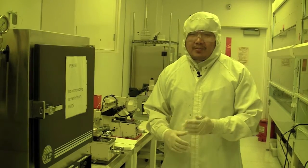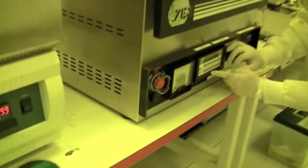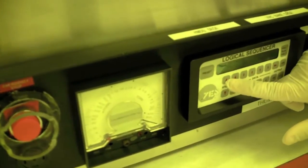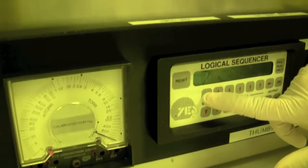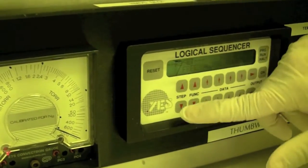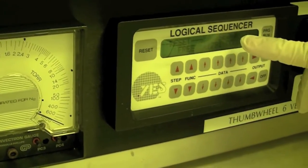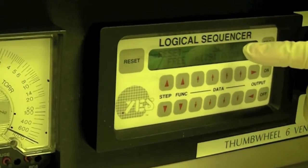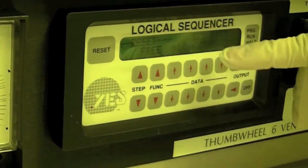So how do we change the processes? We come over here and we hit the step function. So step up will change it, and then step down will change it back. So we want to put on sequence one, which is the HMDS process.